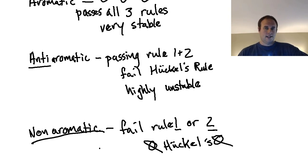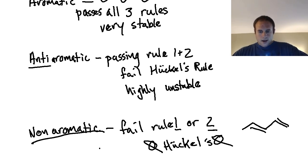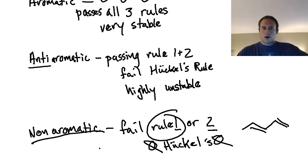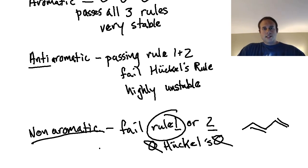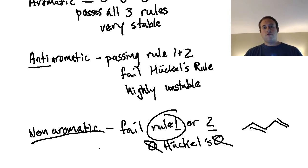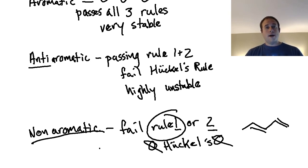If you have an open chain compound, it fails rule one immediately — it's not cyclic, so it's non-aromatic. You stop there. That concludes this lecture on defining what makes something aromatic or not. The next goal is to work through more examples so we can determine whether compounds are aromatic, anti-aromatic, or non-aromatic. Thanks for your support with the channel — comments, likes, and subscriptions always help. See you next time.